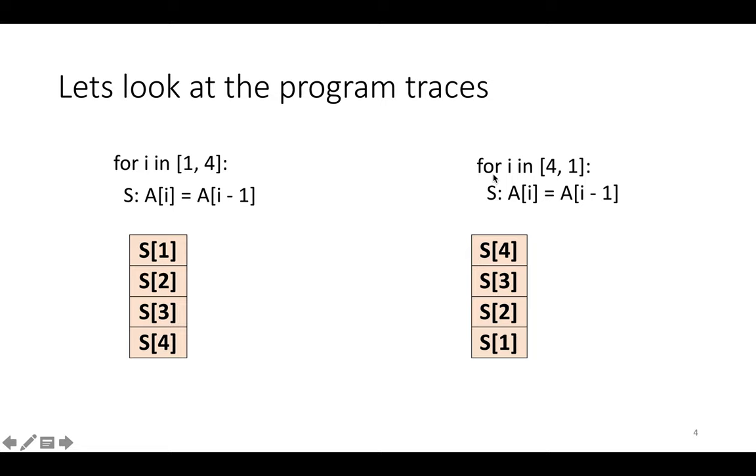Now if we look at the reversed loop trace, with i in 4 to 1, now we're going to have s with i equal to 4, and then s with i equal to 3, and then s with i equal to 2, and then s with i equal to 1.